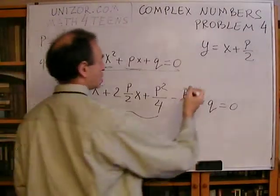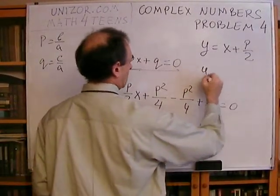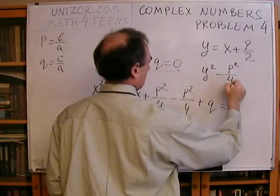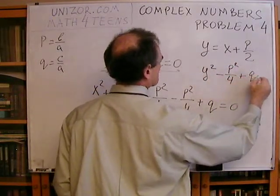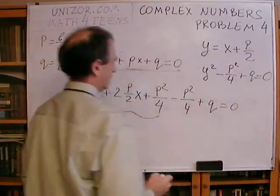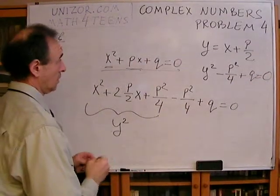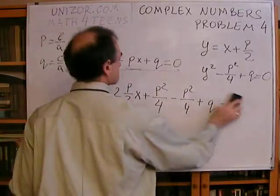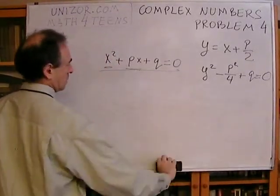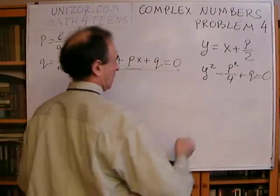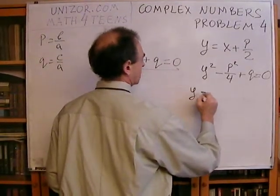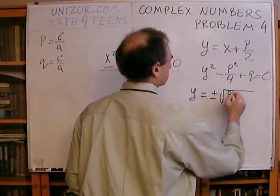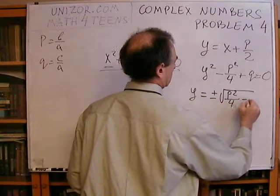So, the equation actually becomes Y squared minus P squared over 4 plus Q is equal to zero, where Y is this expression, and obviously the solution to this is Y is equal to plus minus square root of P squared over 4 minus Q.